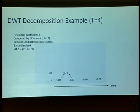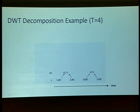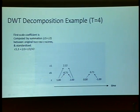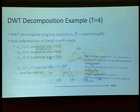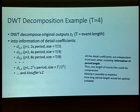For example, creating the detail score: first, the detail coefficient is computed by the difference between two Z-scores, and the scale coefficient is computed by the summation of the original two Z-scores. We then get information of detailed coefficients. DWT decomposes original outputs into information of detailed coefficients. All detailed coefficients are independent from each other, including information of period length.